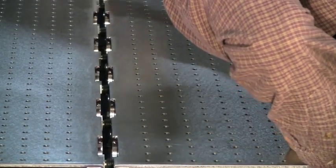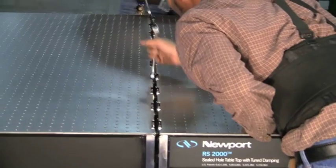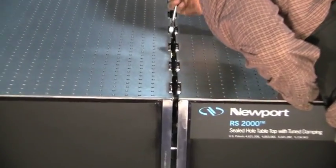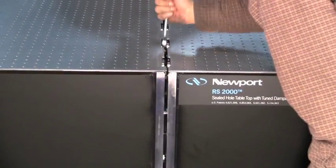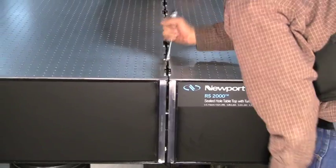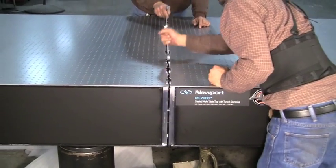This is an iterative process to ensure the two table sections are drawn together as parallel as possible along the top and bottom. This gradual tightening will also help prevent damage to the threads and prevent the bolts from binding.